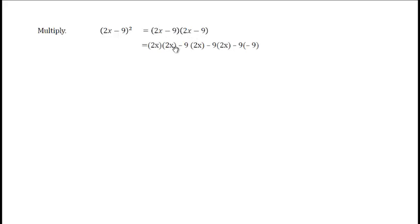First times first, 2x times 2x. Outer times inner, there's a minus 9 and a 2x. I'll put the sign for the minus 9 there. Inner, minus 9 times 2x. And, the last two, minus 9 and minus 9.